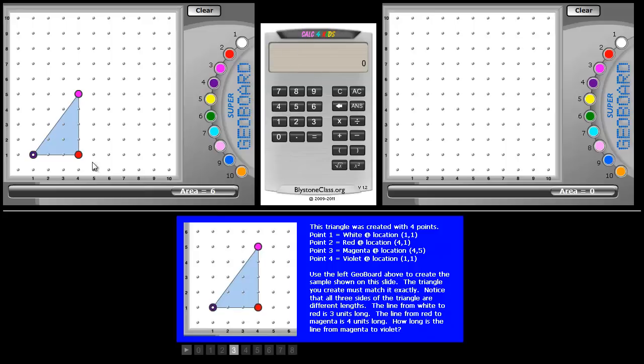First, we'll measure the two sides that are usually designated as A and B. The first line has a length of three: one, two, three.